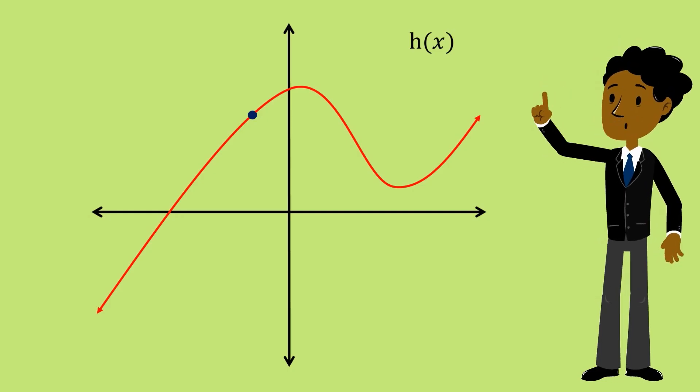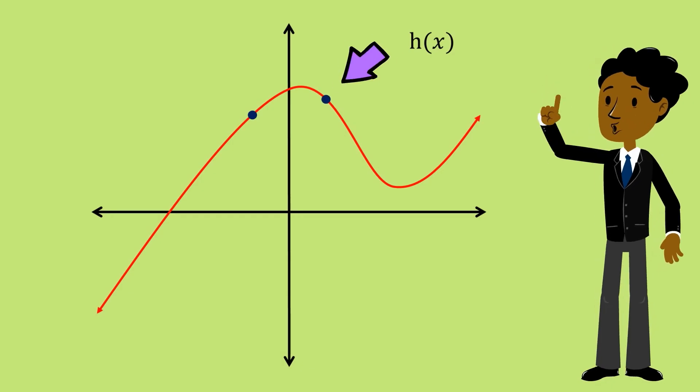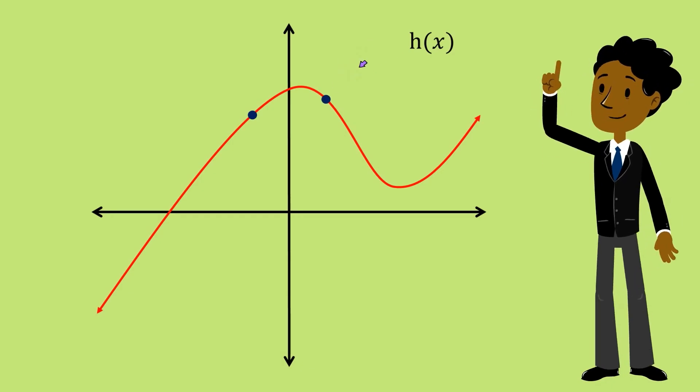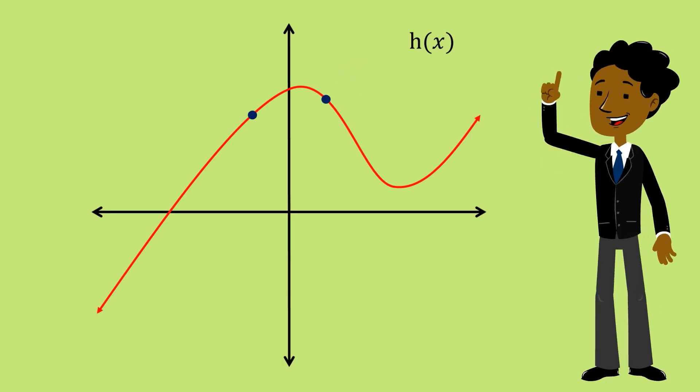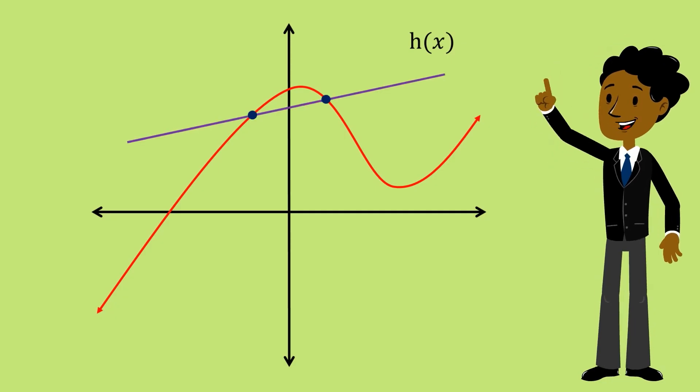To approximate the change at a single point we begin by choosing a point along with one other point. This gives us two points. Using these two points we find the value of the average rate of change between them.